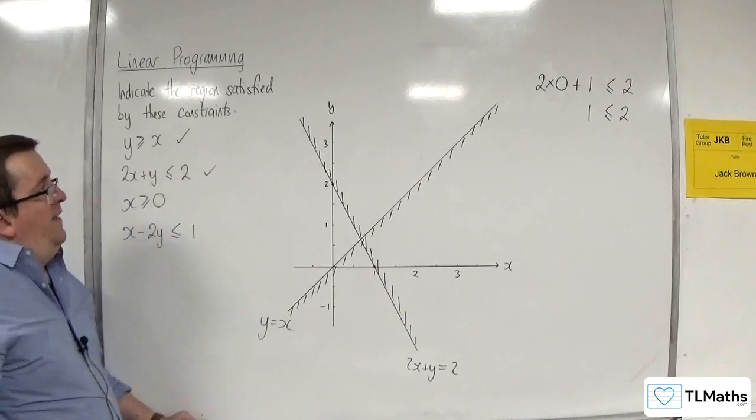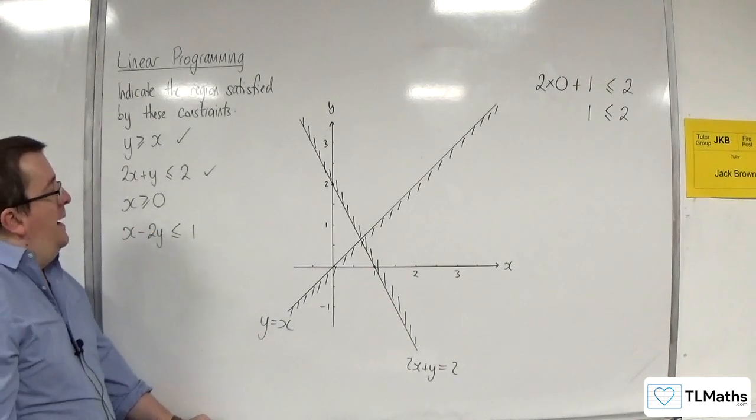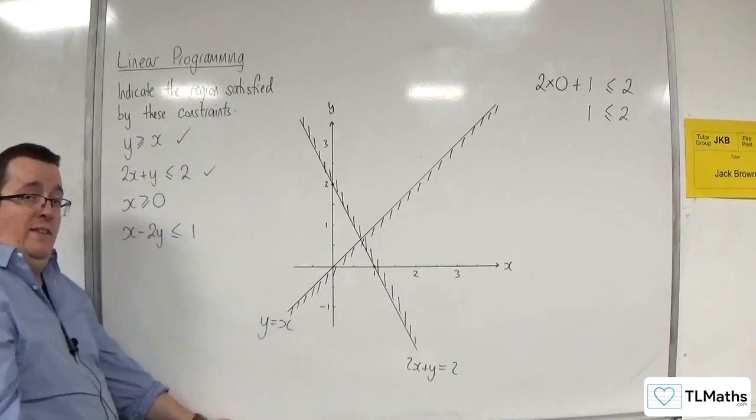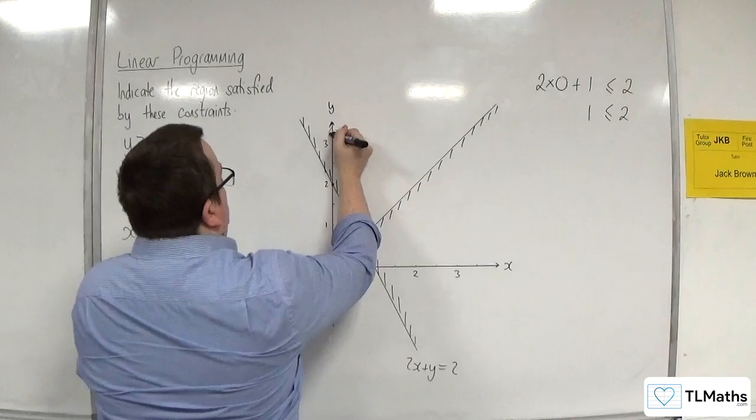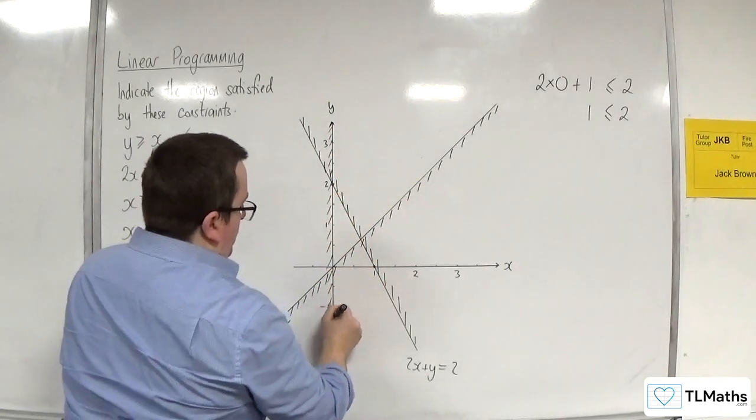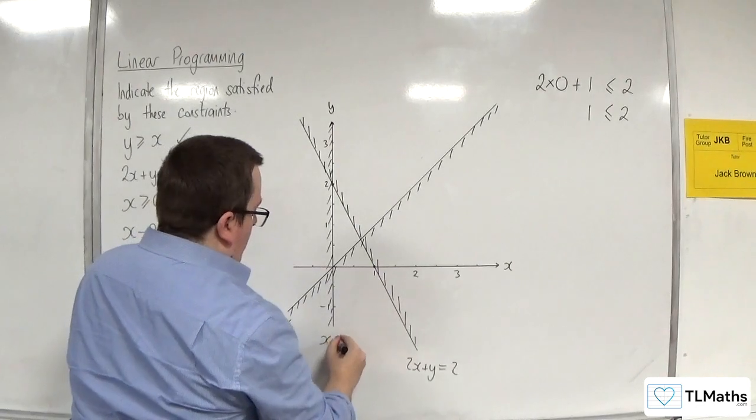OK, then we've got x is greater than or equal to 0. So x equals 0 is the y-axis. And we want when it's greater than or equal to 0, so that's to the right. So we shade the region we don't want, which is there. And that's the x is 0.